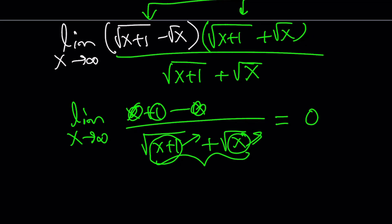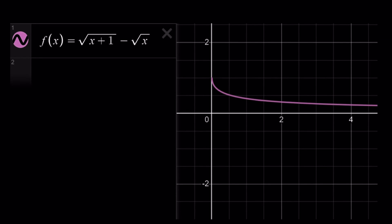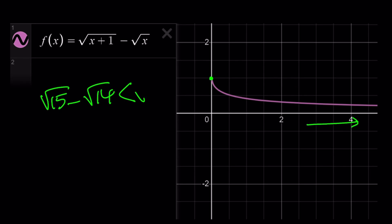So we start at y equals 1 when x is 0, and as x approaches infinity, y values approach 0. Looking at the graph, f of 0 is 1 and as x approaches infinity the function approaches 0, confirming f is always decreasing and f of 14 is less than f of 13.